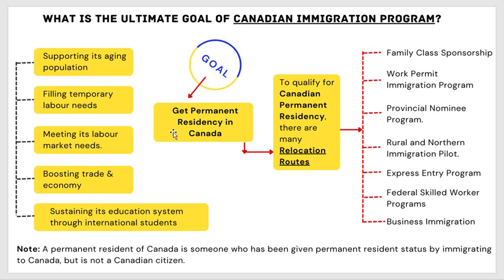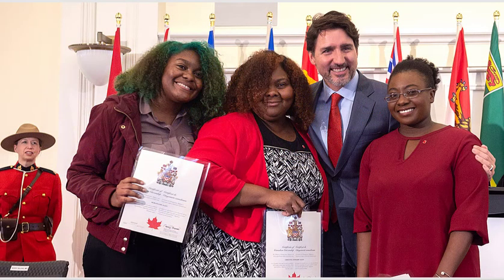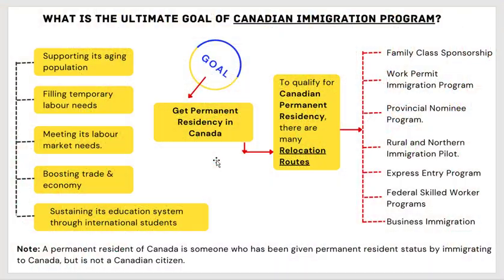What is a permanent residency in Canada? A permanent resident of Canada is someone who has been given permanent residence status — meaning you are recognized by the Canadian government and have immigrated to Canada, but you are not yet a Canadian citizen. After you get your permanent residency status, if you are interested in becoming a Canadian citizen, you can apply after three years of staying in Canada.